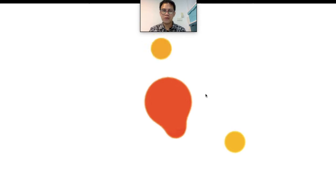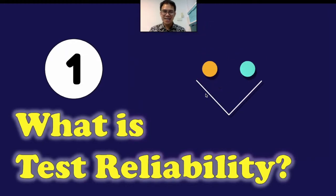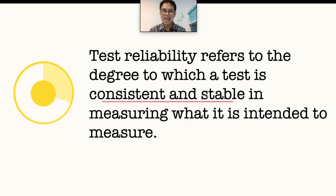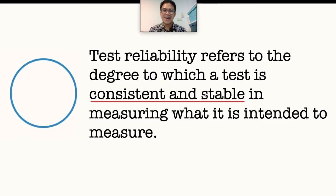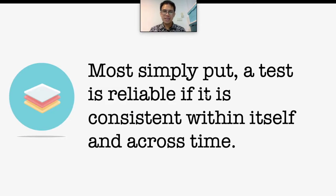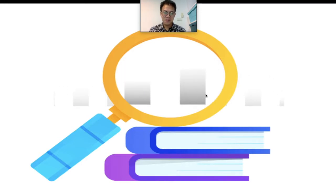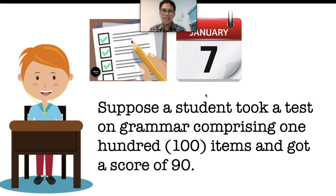Now, let's start with our first question: What is test reliability? Test reliability refers to the degree in which a test is consistent and stable in measuring what it is intended to measure. Most simply put, a test is reliable if it is consistent within itself and across time. To make you understand test reliability, I'll give you an example. Let's suppose a student took a test on grammar comprising 100 items and got a score of 90.